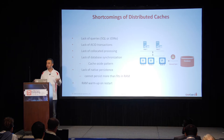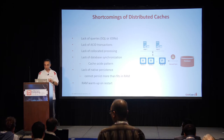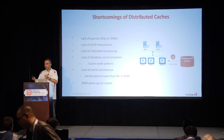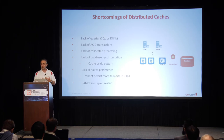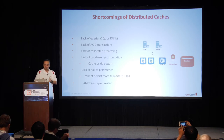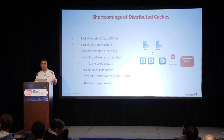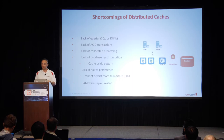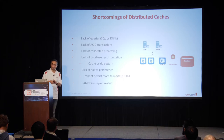Still, distributed caches are short on many features we expect from distributed computing today. For example, there was no way of querying data. Distributed caches work only in a client-server fashion — you bring the data from a server to the client and process it there, so you can only access by key. There are no transactions; ACID compliance is not present in distributed caches. So if you need to be ACID-consistent, you could not have it in distributed caching.